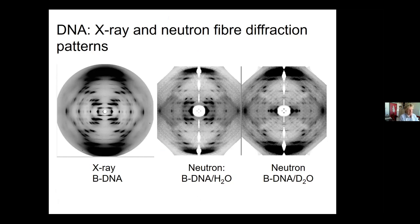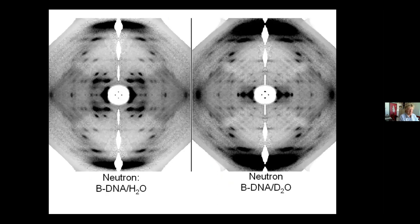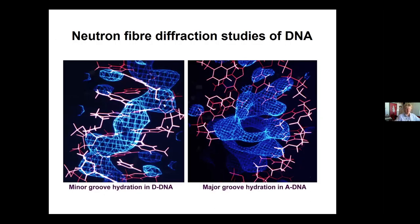Coming back to the neutrons, we used the differences between D₂O-based and H₂O DNA data to do Fourier analysis of where the water was going. We get pictures showing very clearly structured water patterns in two different forms of DNA. This is the D-form of DNA: highly structured water going down the minor groove of the helix. Then the A-form is the opposite - the major groove - with regular water bridges formed linking the phosphate oxygens. So: water driving the transitions, X-rays watching the transitions, and neutrons telling you what the water is doing.